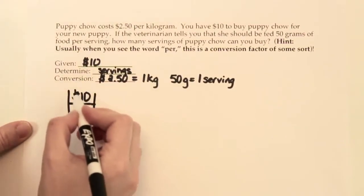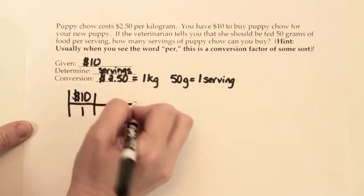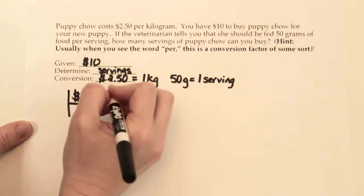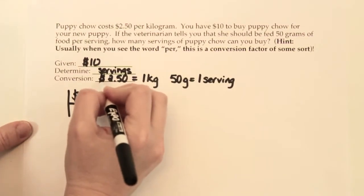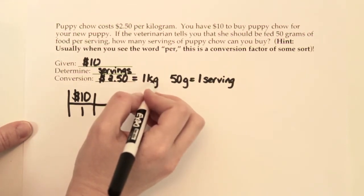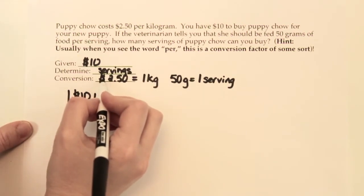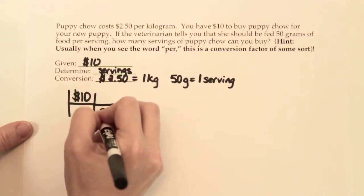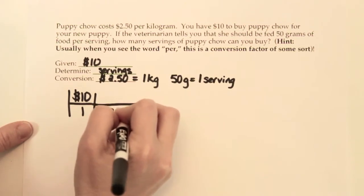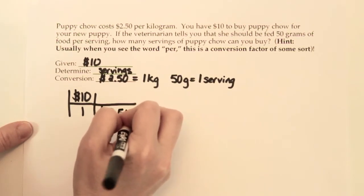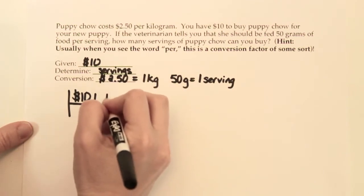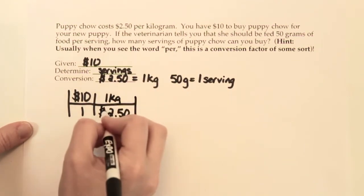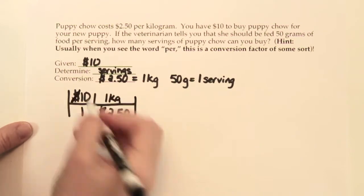We want our dollars to cancel out and go away, so we need to find a conversion factor with dollars in it. This one tells us there's $2.50 per kilogram. Since I want the dollar part to cancel out, I'm going to put that on the bottom — $2.50 — and the one kilogram part goes up at the top. So our dollar signs can cancel.